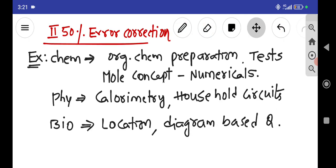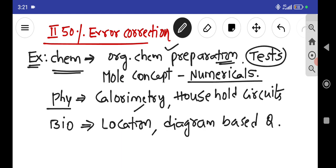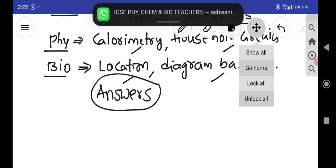Now after writing the test, you have to definitely go for error correction. That means if in chemistry you are making mistakes in organic chemistry preparation, equations, and tests are differences, then numericals in the mole concept. In physics you have done mistakes in calorimetry and household circuits numericals. Biology about pollution question and background beauty questions. Then you have to write the correct answers so that you can rectify these mistakes in the upcoming exam.